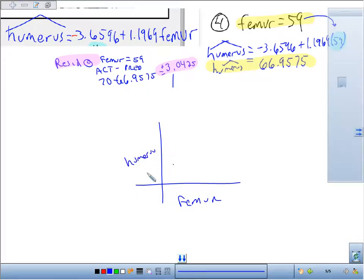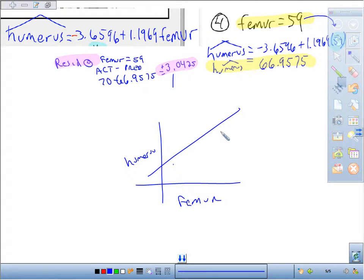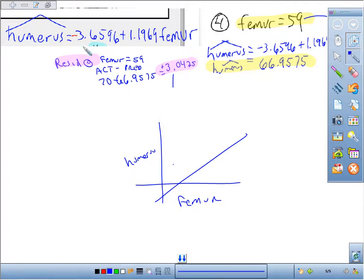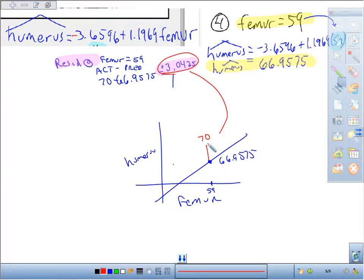I had some line here. Actually, I'll make it have a negative y-intercept since it had a negative y-intercept here. Here was 59. Here was my predicted value of 66.9575. And above it, a little bit, was 70 to give me a difference of positive 3.0425 for my residual.